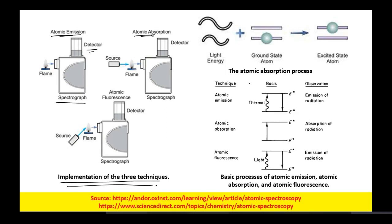In atomic absorption, there will be a source, then a flame where the sample will be in atomic form, and then on the other side the detector gives the spectrogram. In atomic fluorescence spectroscopy, the source and detector are at a 90-degree angle, and atomization takes place in the flame.